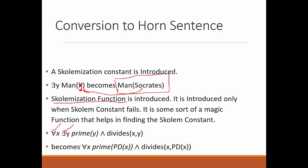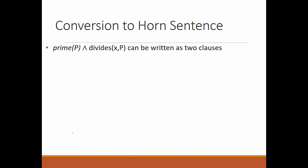A horn sentence is a sentence or conjunction of sentences without an existential quantifier. If substituting a constant fails, the Skolemization function comes into play. For example, pd(x) here is a Skolemization function, and it helps in eliminating the existential quantifier, making the expression a horn sentence.